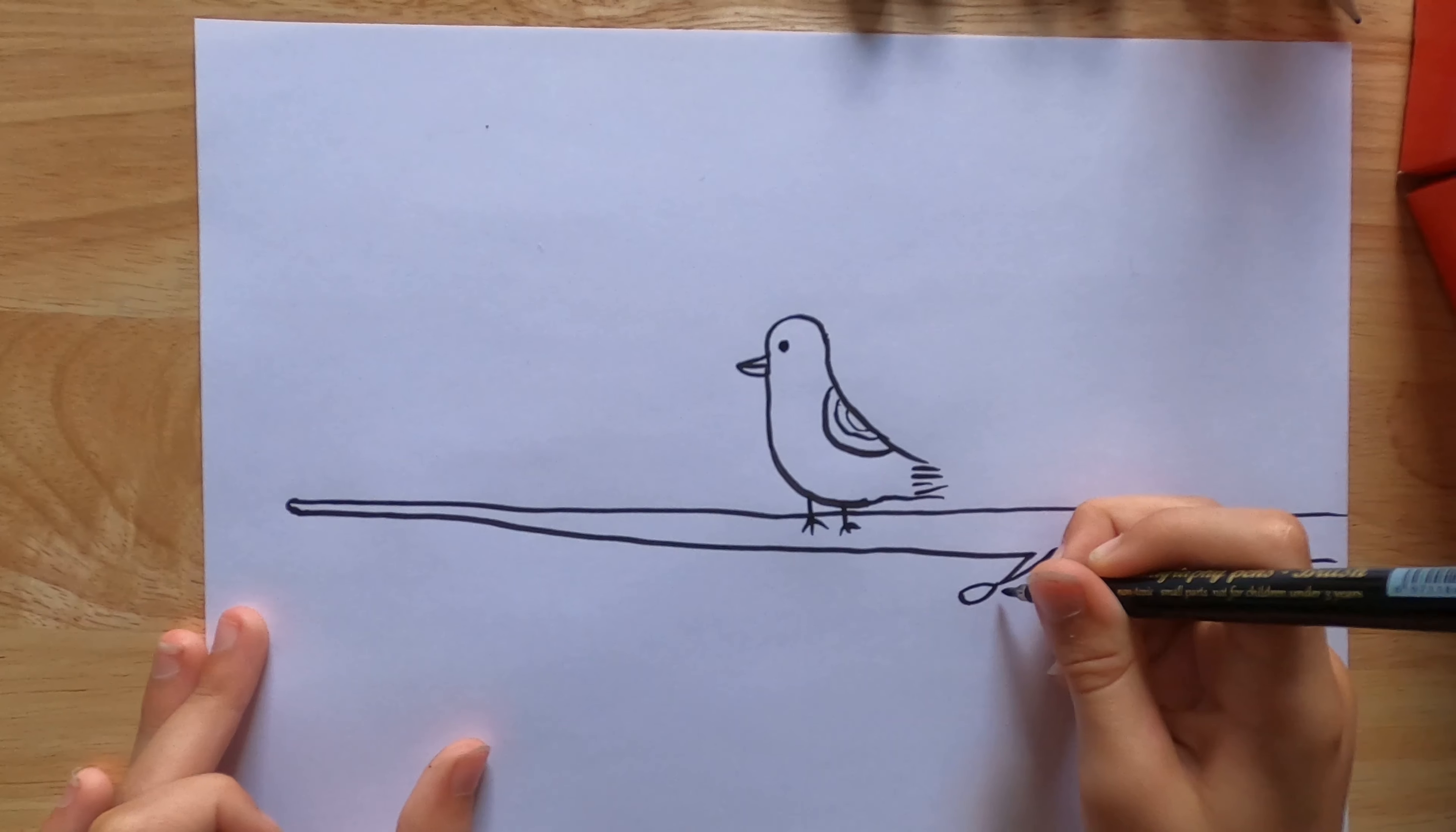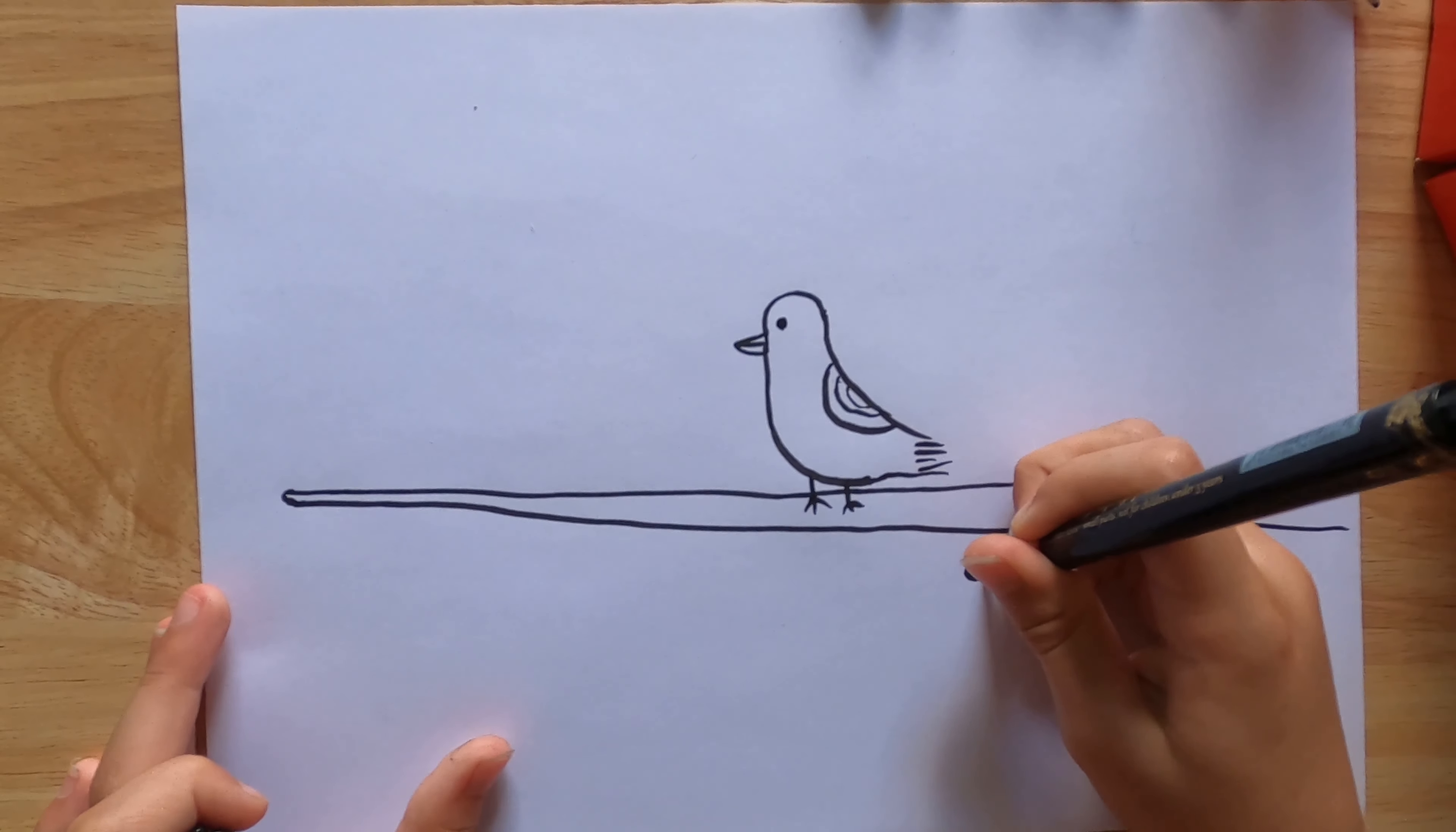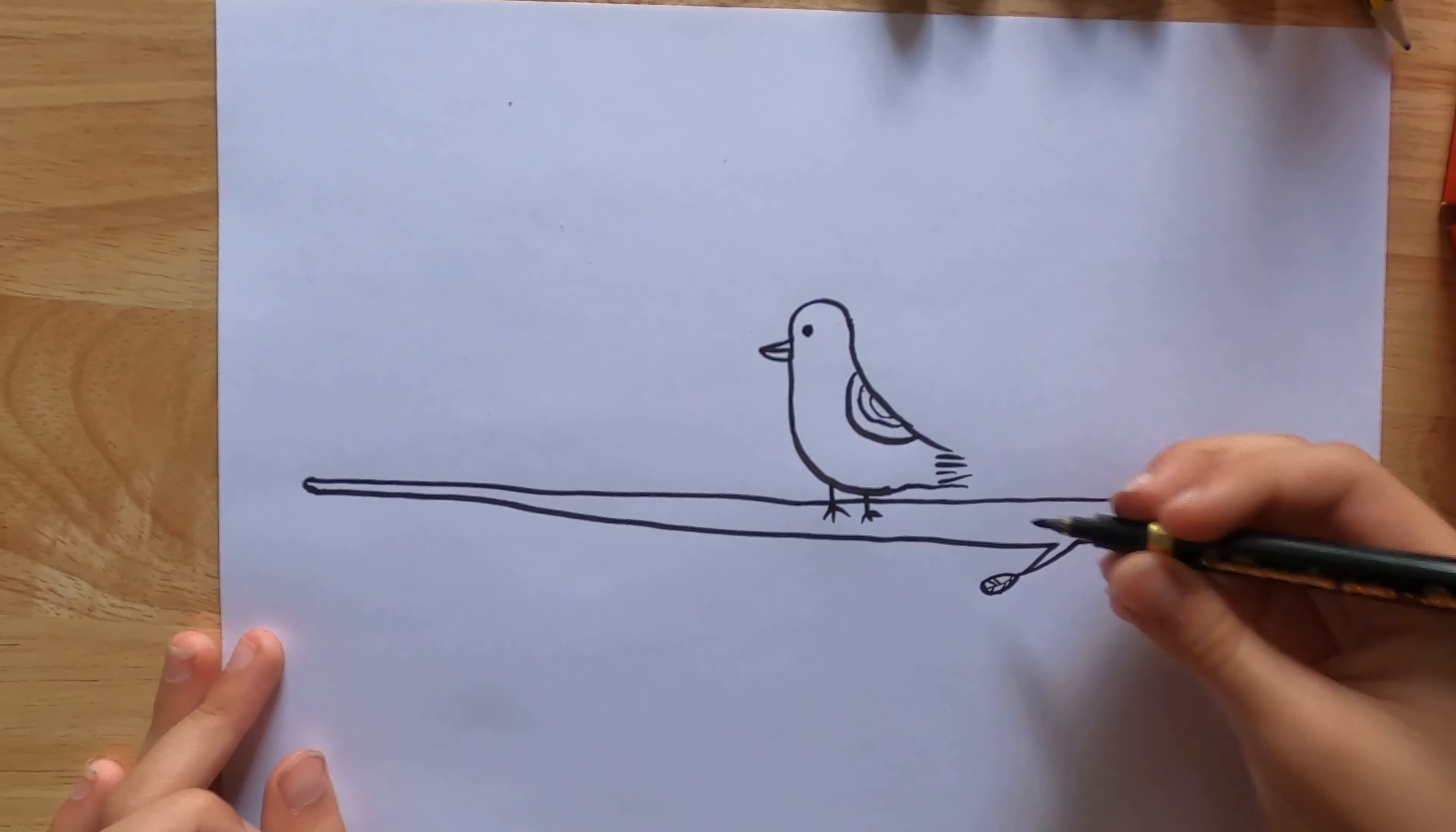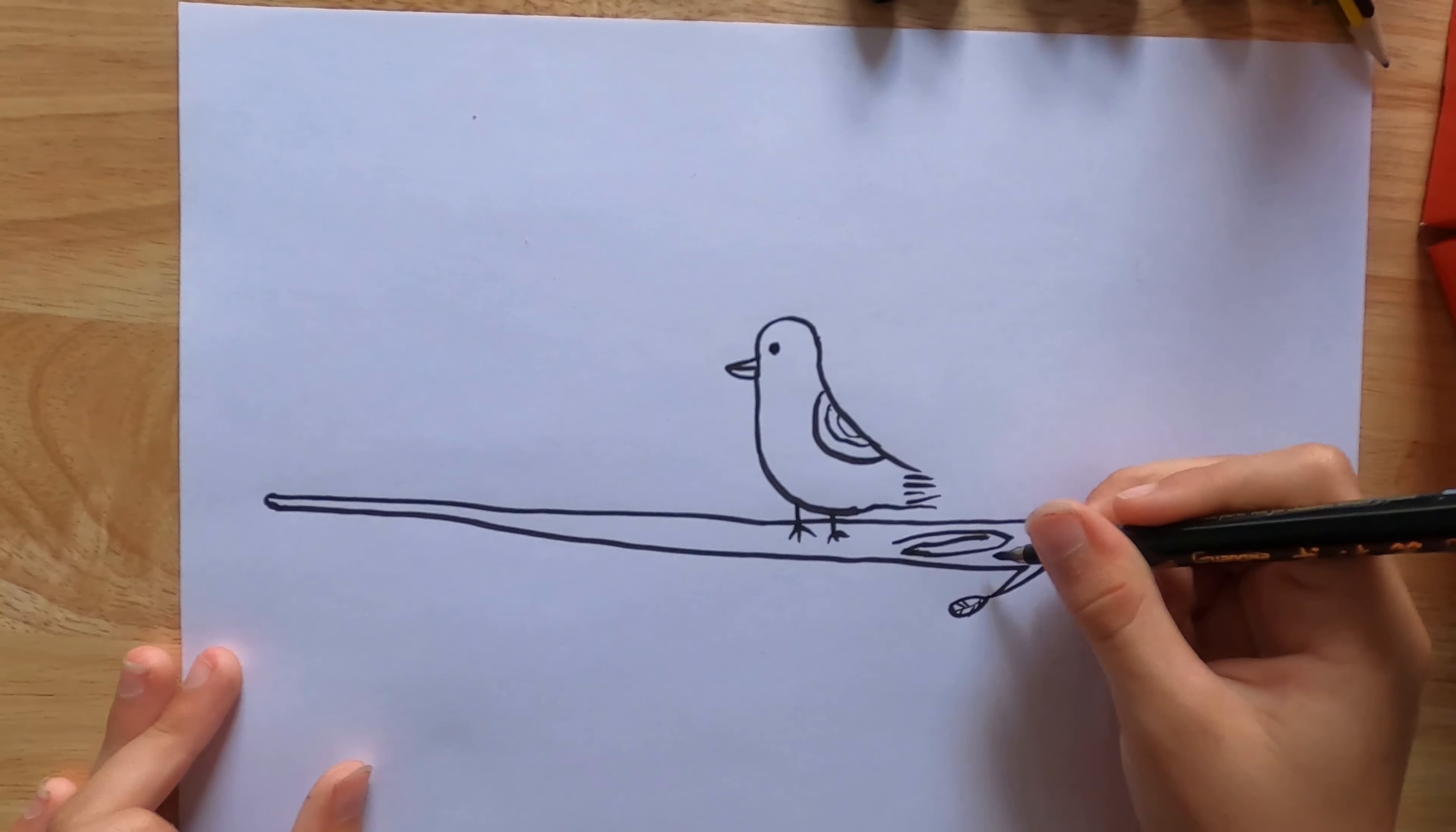So first, do like you're doing a loop. And then do a nice thin line underneath. Then just some lines. Now we're going to just add some shapes like this. Each curve has a point at the end. We want one, two, three curves.